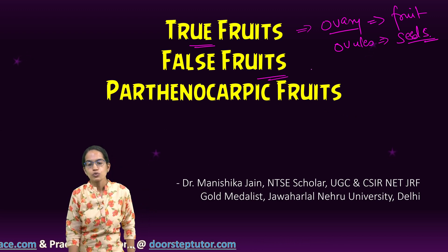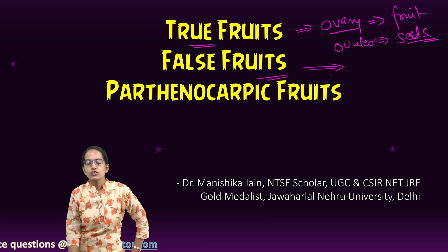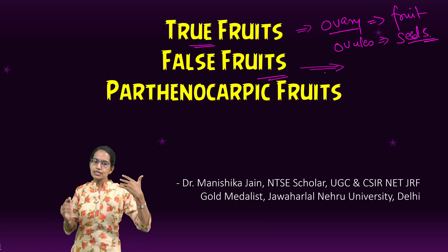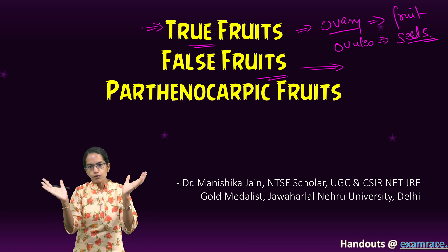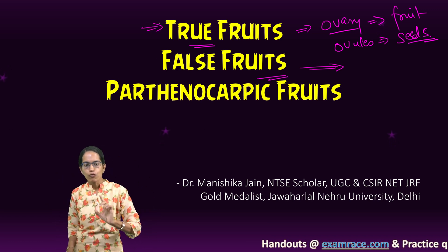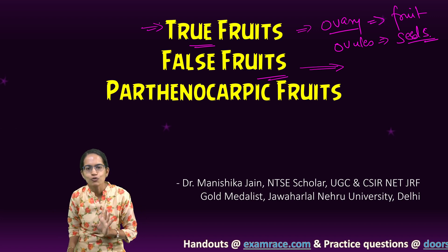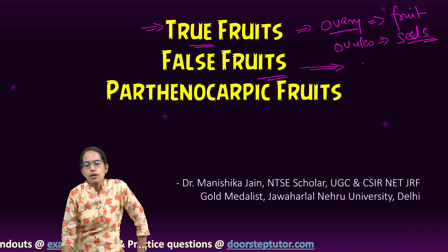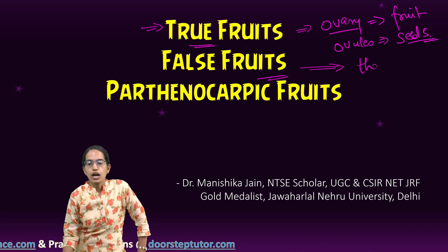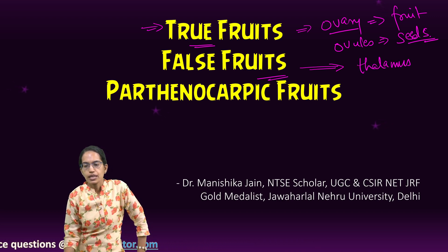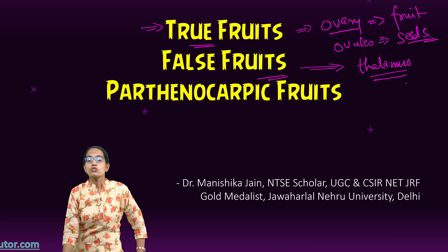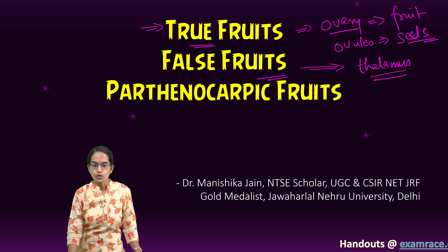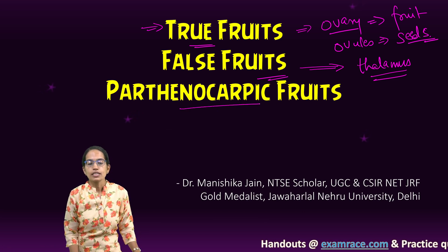In the case of false fruit, when a true fruit forms, the other floral parts would degenerate and fall off. However, under false fruit, the other floral parts don't degenerate — they do not fall off. Some of them, along with the ovary, are utilized, and these are mainly the thalamus or the inflorescence. That's what constitutes the formation of false fruits.